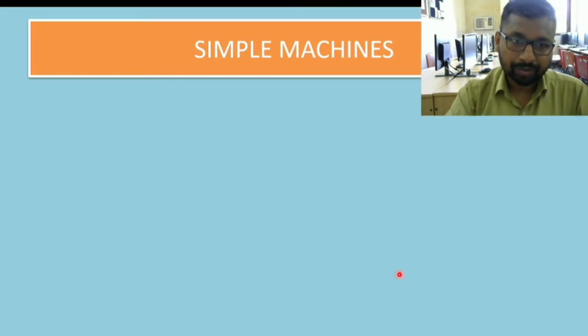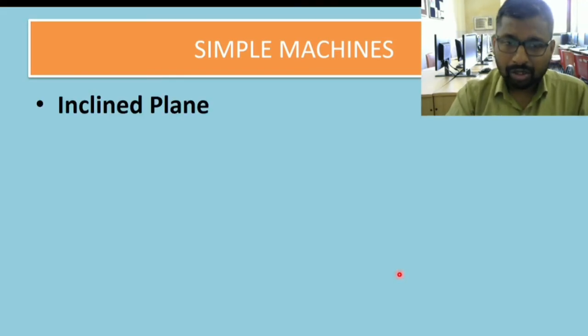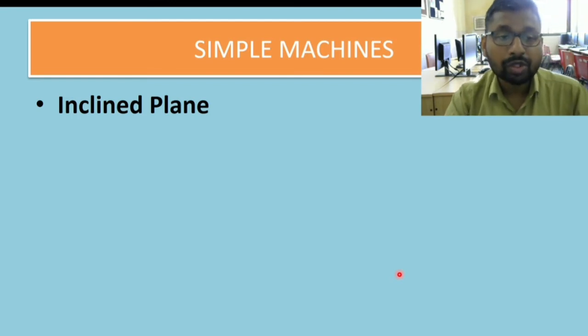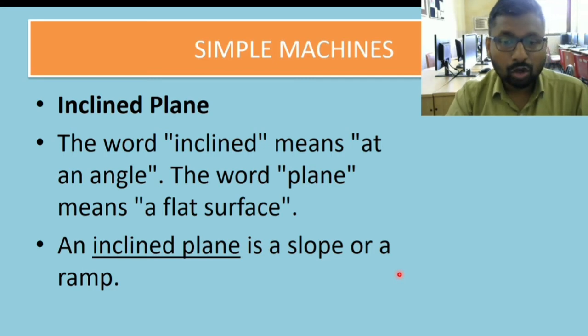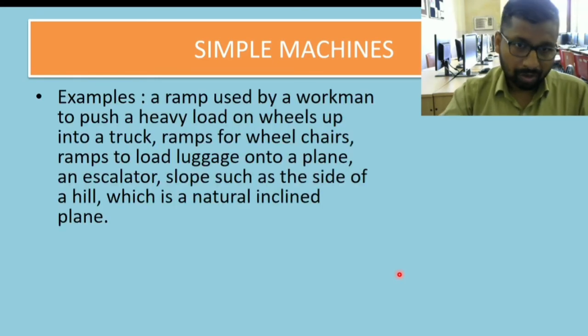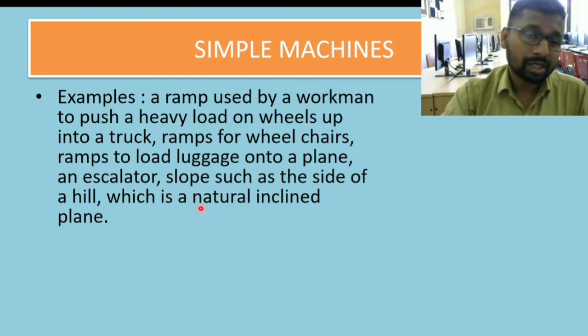Then comes inclined plane. According to me, this is the most simple kind of machine. The word inclined means at an angle. When you make a surface at some angle, we call it an inclined plane. The word plane means a flat surface. An inclined plane is a slope or a ramp. For example, a ramp used by workmen to push a heavy load on wheels up into a truck, ramps for wheelchairs, ramps to load luggage onto a plane, or slopes such as sides of hills. These are some natural and artificial inclined planes.